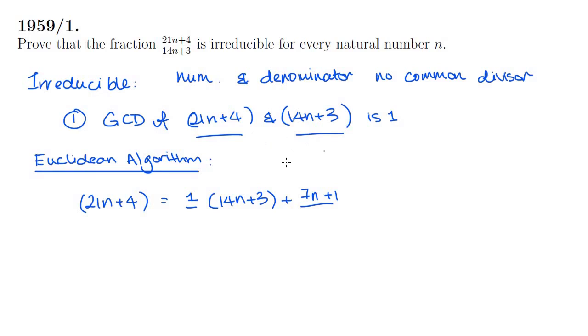Now that we have this step, we're going to do the same thing again with 14n plus 3 and the old remainder, 7n plus 1, so we want to write 14n plus 3 as some multiple of 7n plus 1 and some remainder. So in this case, 7n plus 1 goes into 14n plus 3 two times, and the remainder is 1.